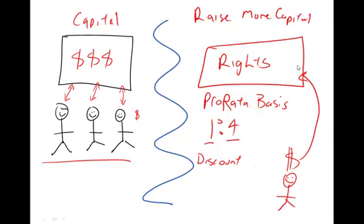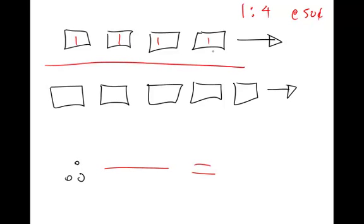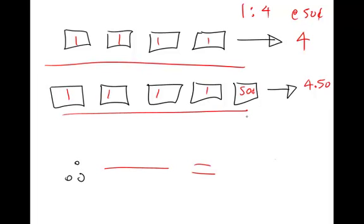Theoretically, the market price will drop after a rights issue. For example, in a one-for-four rights issue at 50 cents, you originally have four shares trading at a dollar each — worth four dollars. After the rights issue you have four shares at a dollar plus one new share at 50 cents, giving you five shares worth four dollars fifty. Dividing four-fifty by five gives you 90 cents — so the share price drops from a dollar down to 90 cents because there are more shares on the market.